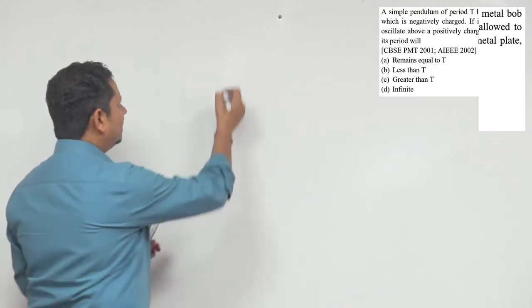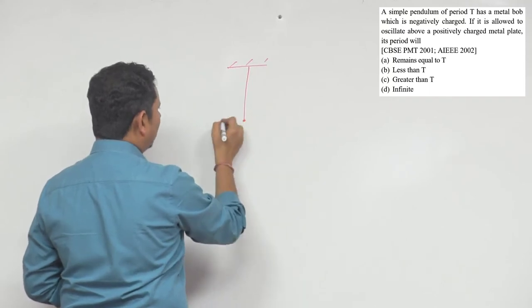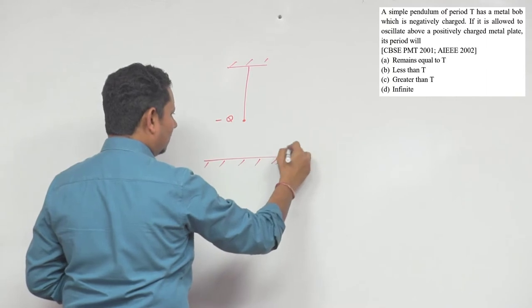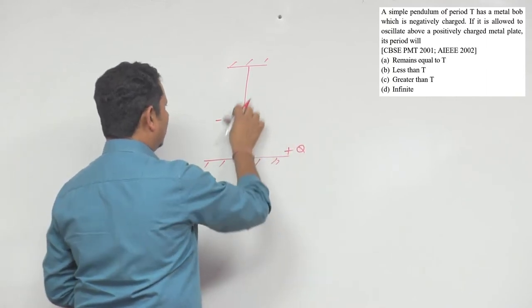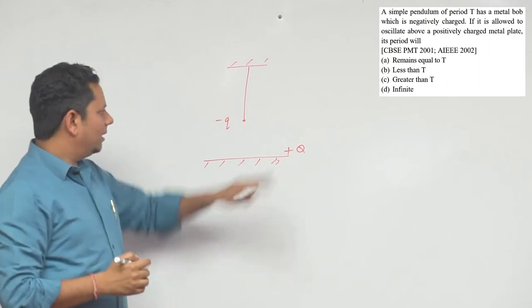Simple question. You have a metal bob with minus Q charge, and here you have a metallic plate with plus some Q charge.